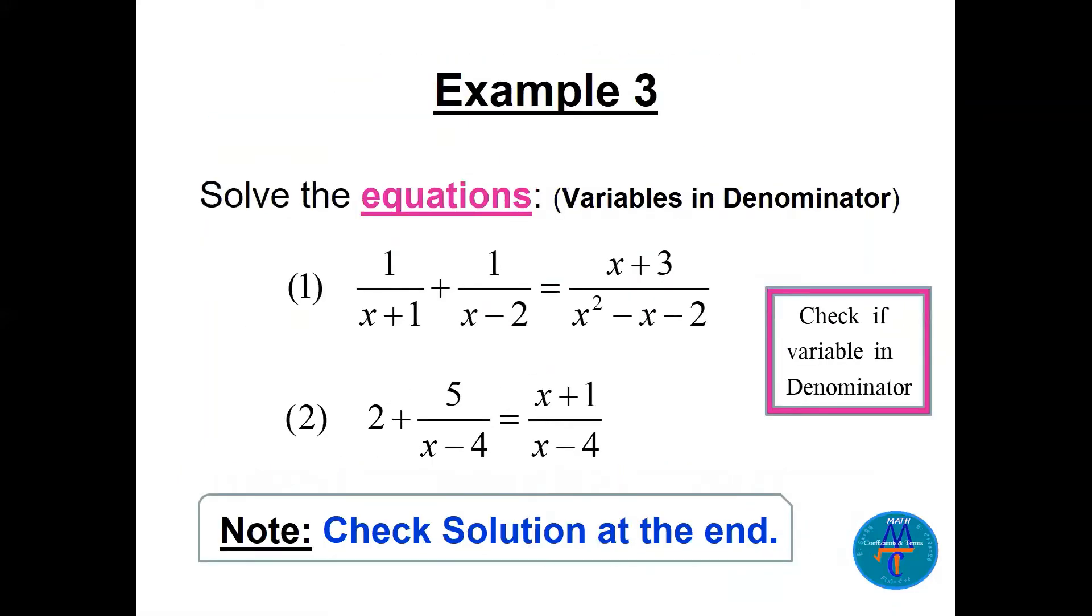Now directly we go here. Check if there is a variable in the denominator. You see that? Look at the denominator, x plus 1, x minus 2, this 1, x minus 4. Now at least one of them has an x in the denominator, we have to check. Check solution at the end. Must.